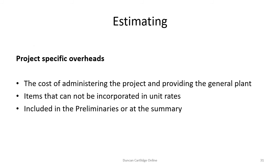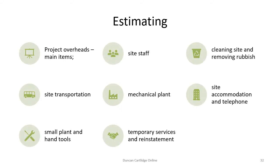In addition to general overheads, project-specific overheads also need to be considered. These items are usually priced in the preliminary section of the bill of quantities or work package. Here are some typical project overhead items. These costs apply to the project as a whole but cannot be included in work section rates. A further video on pricing preliminaries is included elsewhere.